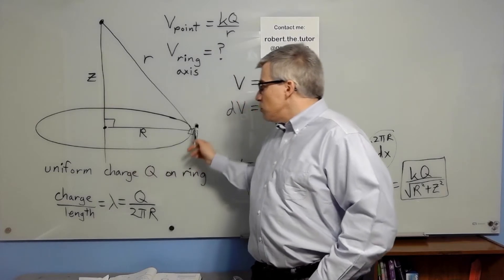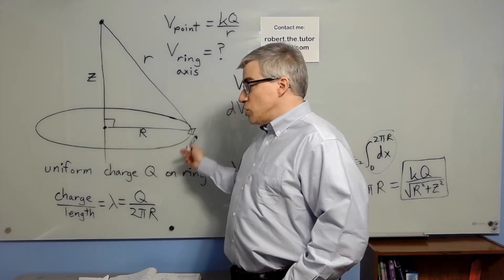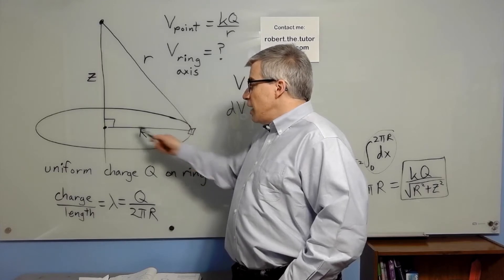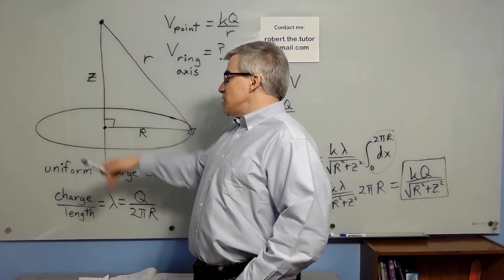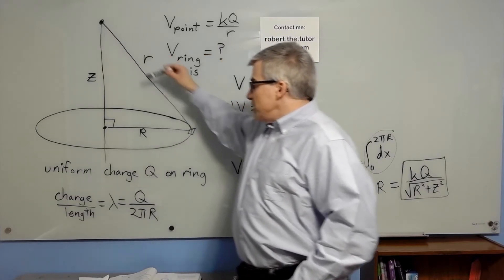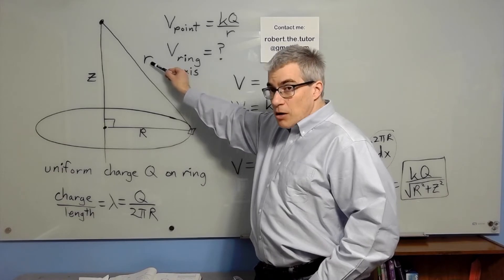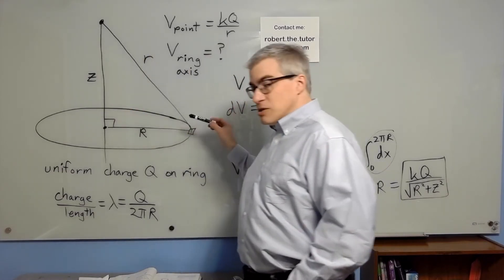So I've drawn it here, we have 2 pi R circumference, our radius, total charge Q on the ring, and we're a distance Z along the axis, which means that the distance from the point to a random bit of charge is always going to be R, which is the square root of Z squared plus R squared.